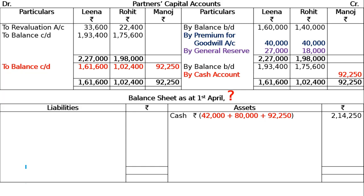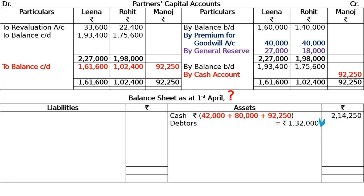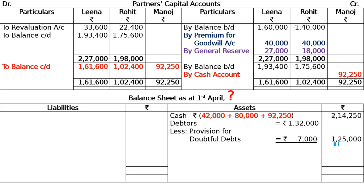In the balance sheet, cash was 42,000. New partner Manoj brings in 80,000 as goodwill and 92,250 as capital — adding all these gives total cash of 2,14,250 approximately. Debtors are 1,32,000. Provision: original was 2,000, and 5,000 from general reserve is added, making total provision 7,000. Net debtors after provision shown accordingly. General reserve of 50,000 less 5,000 transferred to provision leaves 45,000 distributed to partners.